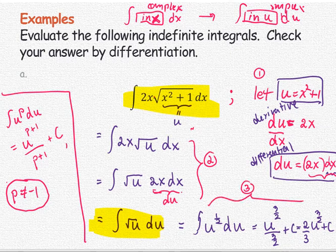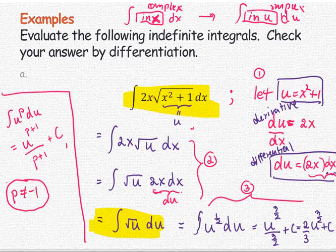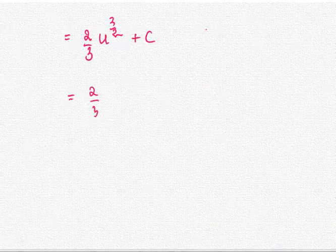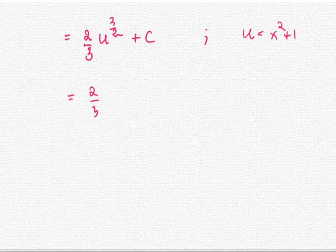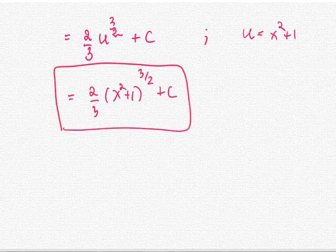Step four: we now have two-thirds times u to the three-halves plus C. The last step is to replace u with the original expression — u was x squared plus one — so we rewrite it as two-thirds times (x squared plus one) to the power three-halves plus C. This is your final answer.